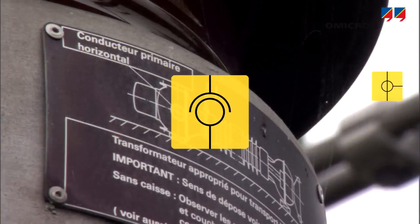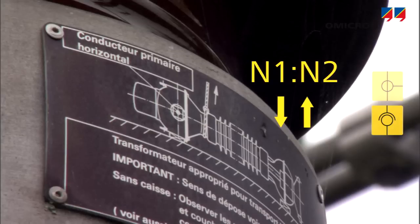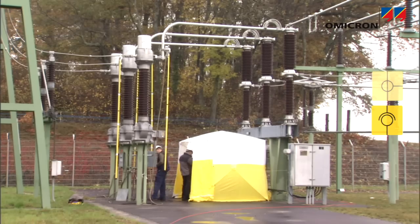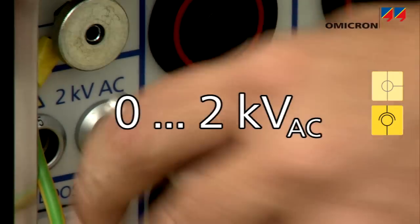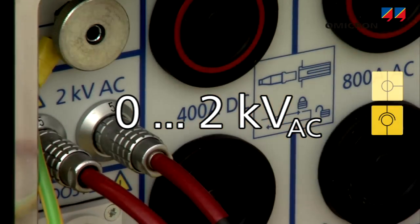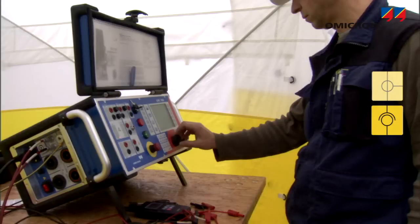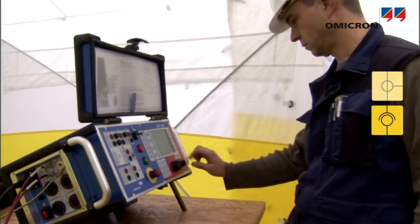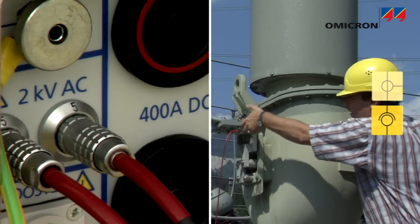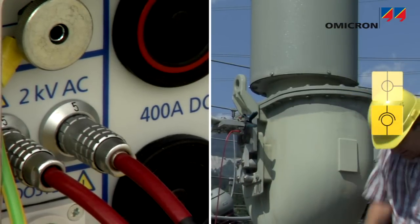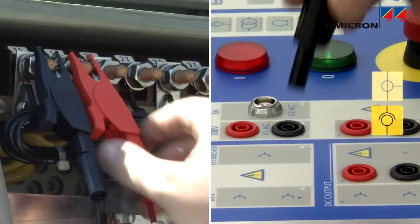For a potential or voltage transformer, it is crucial that their ratio and polarity as well as their burdening are correct. The CPC 100 can generate up to 2,000 volts AC for injecting into the VT's primary side in order to verify its ratio. During the ratio measurement, the CPC also checks the VT's polarity by measuring the signal phase angles on both sides — on the primary side by measuring the high voltage output signal, and on the secondary side by measuring the signal of the voltage measurement input.